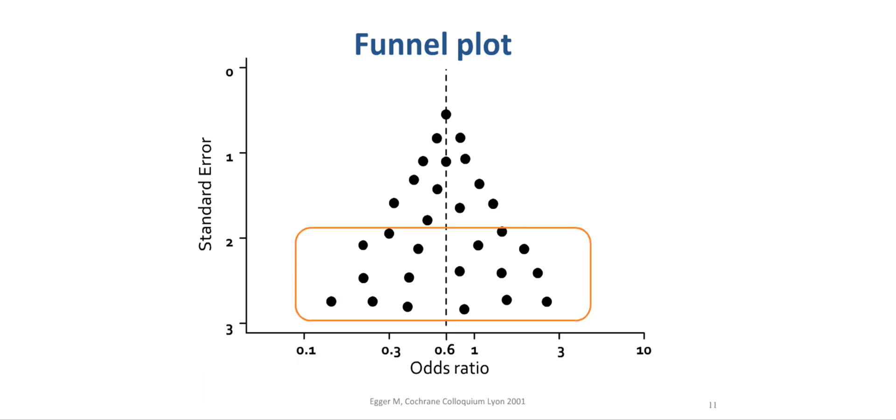As a result of random distribution of individual study results, a funnel plot should be symmetrical around the summary estimate of effect. The smaller the study, or the less precise the studies are, the larger will be the spread around the best estimate, or the summary estimate of effect. That is, the further down on the y-axis the dots are located, the wider may be the distribution.